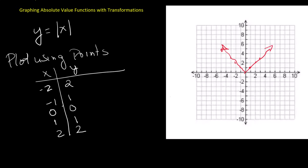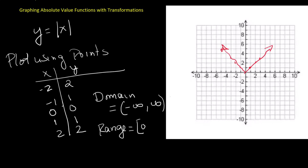Now let's identify the domain and range. The domain is all real numbers, which in interval notation is written as parentheses negative infinity, infinity parentheses. The range includes all values greater than or equal to 0, which in interval notation is written as bracket 0 infinity parentheses.